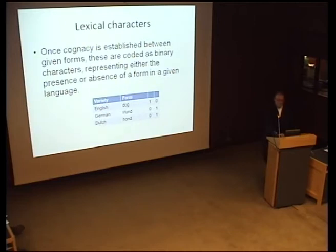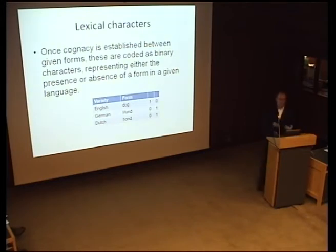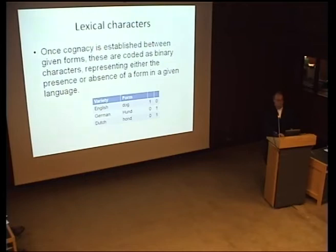Once cognacy is established, we encode these into binary characters representing either presence or absence of a form. The implication is that languages sharing presence of a form — for instance, German and Dutch both having a hound-like form for 'dog' — are more closely related. English here is innovative, having switched its hound-like word to 'dog' and its dog-like word to 'hound.'